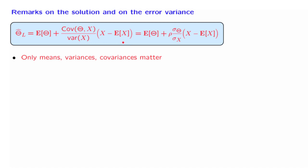Now let us start looking at the form of the solution, and let's try to give some interpretation. Suppose that the correlation coefficient is positive. Then what does this estimator do? It starts with a baseline estimate, which is the expected value of theta, and then provides us with a correction term that's based on the data.